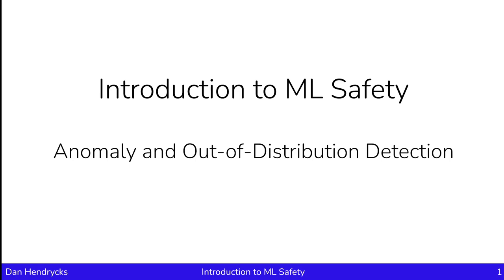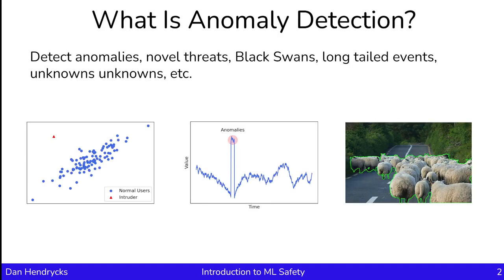In this first lecture on monitoring, we'll discuss anomaly detection, or as it's sometimes also called, out-of-distribution detection. In anomaly detection, we'll try to detect unusual events, novel threats, black swans, long-tailed events, unknown unknowns, and so on.